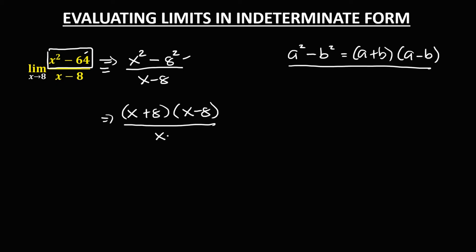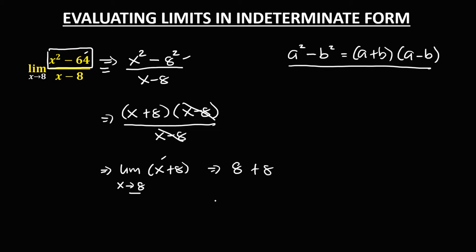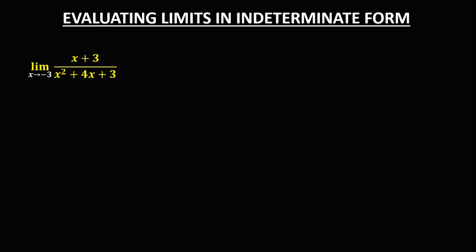We can cancel the (x - 8) terms. So the new equation is the limit of (x + 8) as x approaches positive 8. Using direct substitution, we substitute x = 8: we get 8 plus 8, so the limit is equal to positive 16.